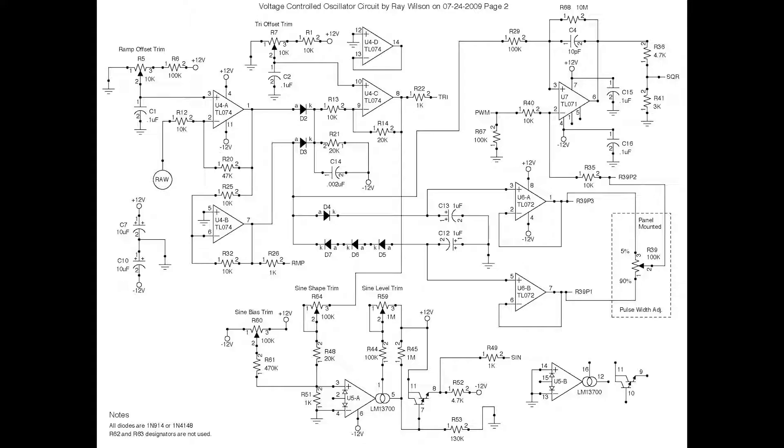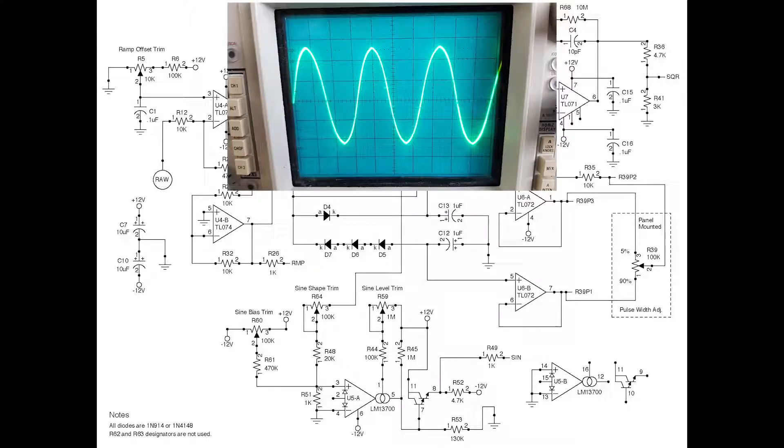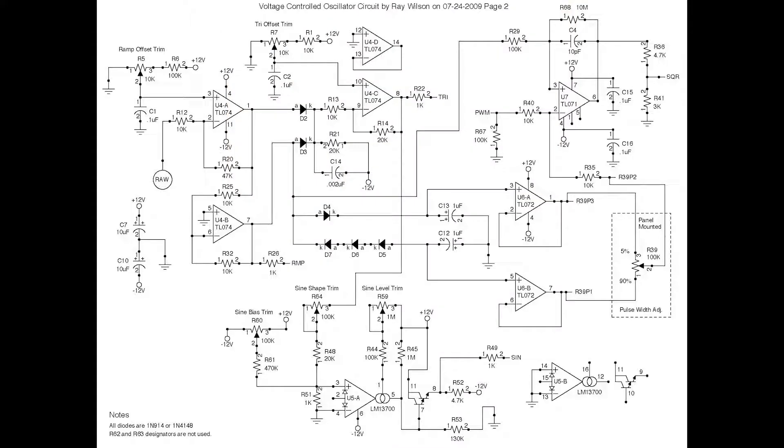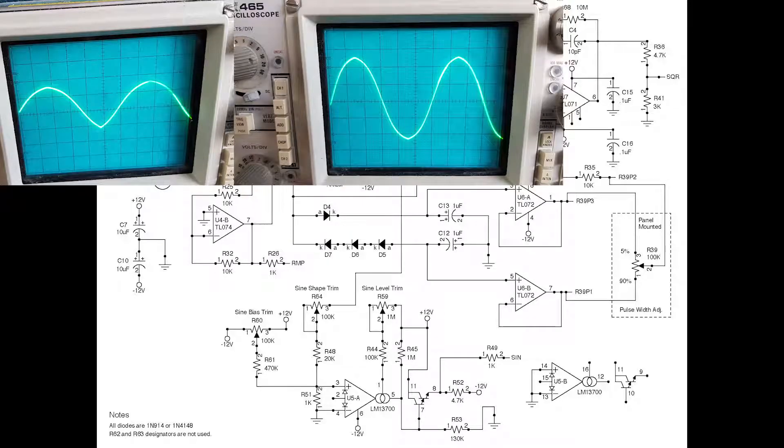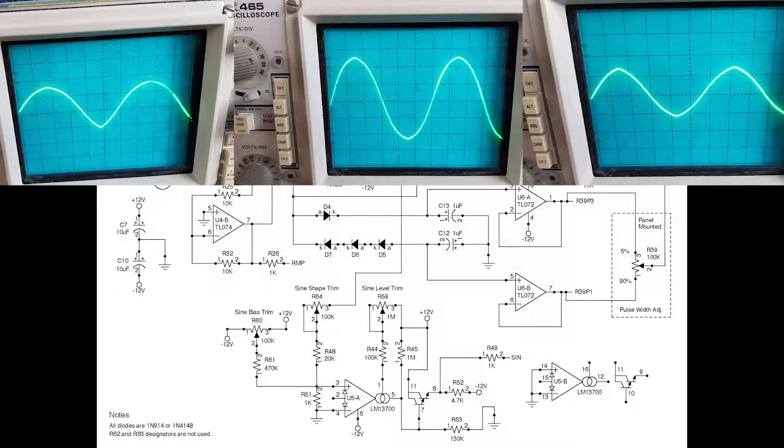And then of course you have your sine wave output which has three different adjustment potentiometers, because it's a little difficult to set it up I guess and get all the offset taken out and stuff.